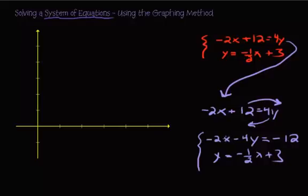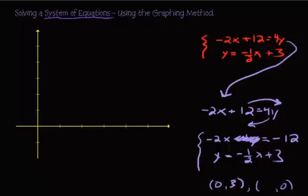Using the intercept method on the first equation: let x equal 0 and solve for y — y equals 3, giving point (0, 3). Then let y equal 0 and solve for x — x equals 6, giving point (6, 0). Plot those two points, connect them to form the first line, and label it as the original equation: negative 2x plus 12 equals 4y.